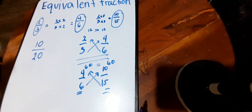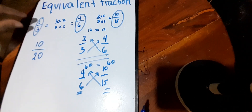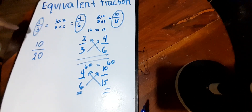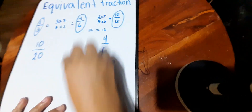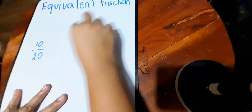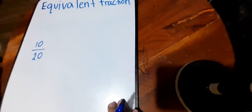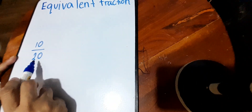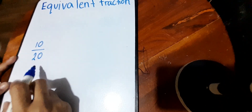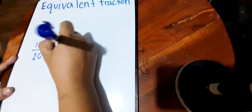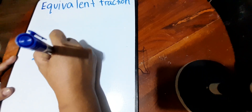Multiplying numbers to a certain fraction gives you the equivalent. Another way is, instead of multiplying, we can also divide. But when we divide, it should be the same number. So like for example, if we wanted to know the equivalent fraction of ten over twenty, we can just rewrite this one first.